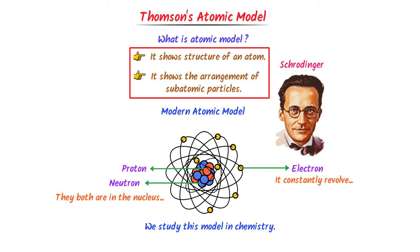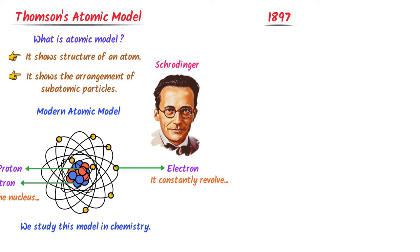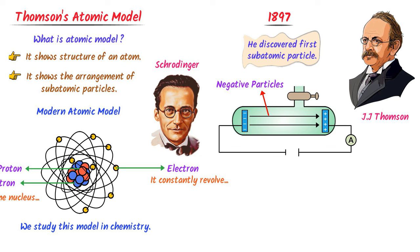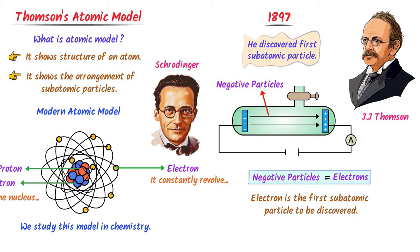Now to study Thomson's atomic model, let me take you back to 1897. In 1897, a prominent scientist J.J. Thomson discovered the first subatomic particle. He discovered negatively charged particles in the cathode ray tube experiment and called these negatively charged particles electrons. Remember that an electron is the first subatomic particle, and it was discovered by J.J. Thomson. This discovery of the electron paved the way for the development of new atomic models and theories.